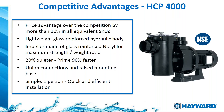Here you can see our competitive advantages. Price advantage over the competition — about 10% less across all SKUs. Lightweight glass-reinforced hydraulic body. Impeller made of glass-reinforced material for maximum strength. 20% quieter. It primes up to 90% faster than competitive brands. 4-inch unions on the biggest model. Very easy to install — simply by one person, quiet and efficient.